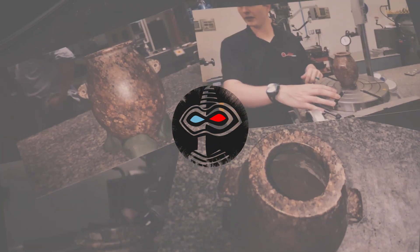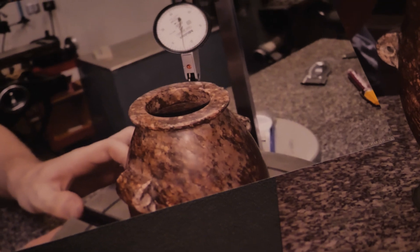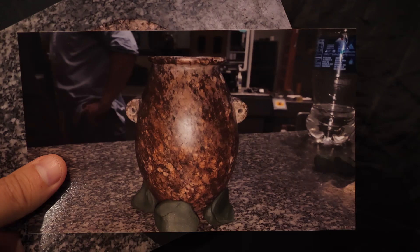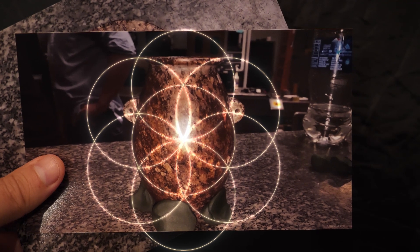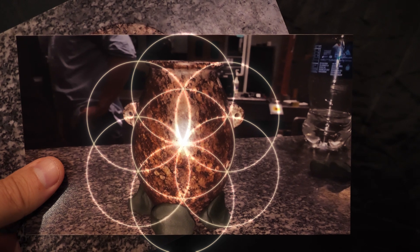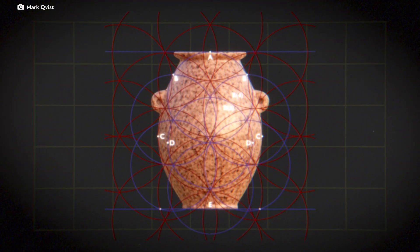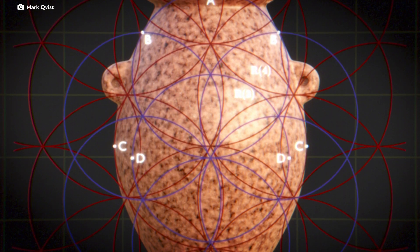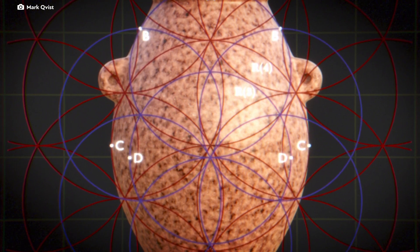During their initial examination of the artifact, researchers identified a pattern of unit circles resembling what is known today as the Flower of Life. Multiple grids of this pattern were apparent, suggesting it might relate to a technology used.